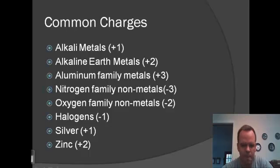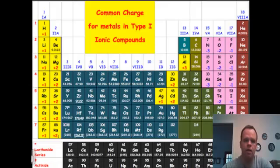As you go across the periodic table, the alkaline metals are going to be plus one when they're an ion. The alkaline earth metals will be plus two. The aluminum family metals will be plus three. The nitrogen family nonmetals will be negative three. The oxygen family nonmetals will be negative two. The halogens will be negative one. And within the transition metals, there are two that will always have the same charge: silver, always plus one, and zinc, always plus two. If you look at this chart, that actually includes cadmium also as a plus two, but we don't use that nearly as frequently.